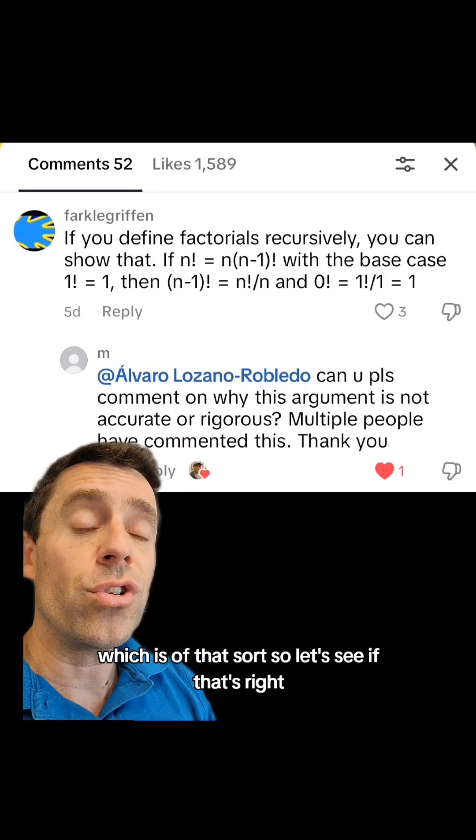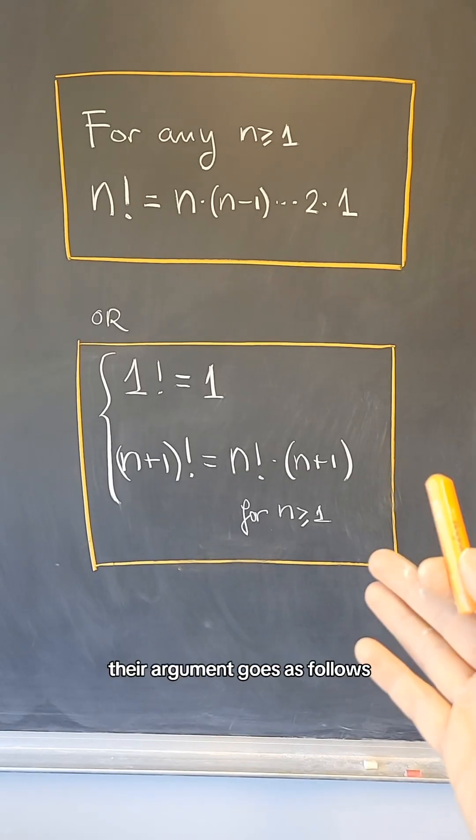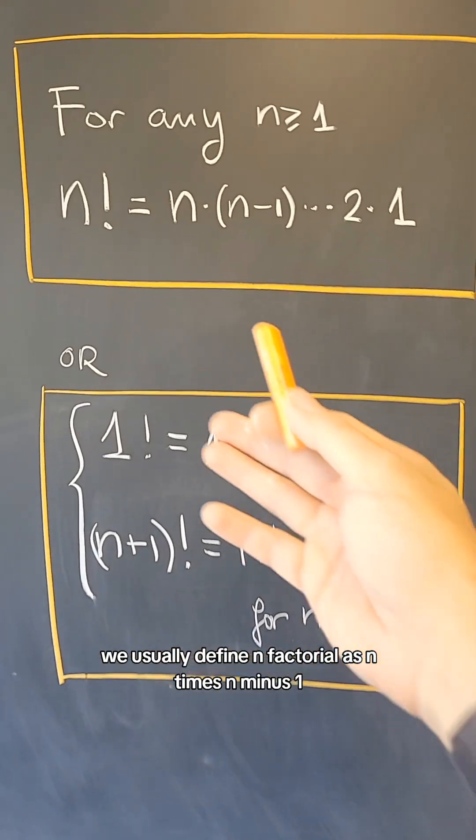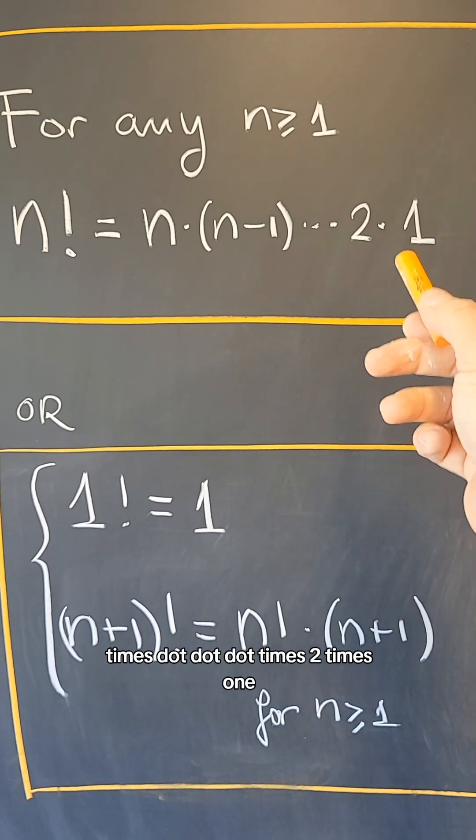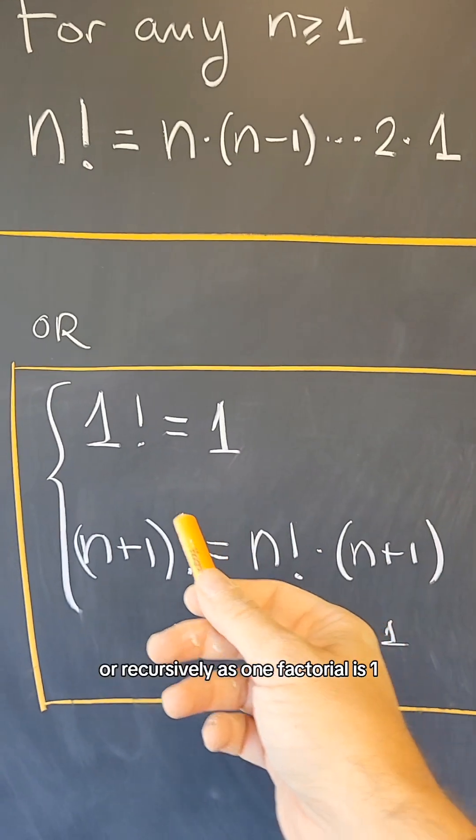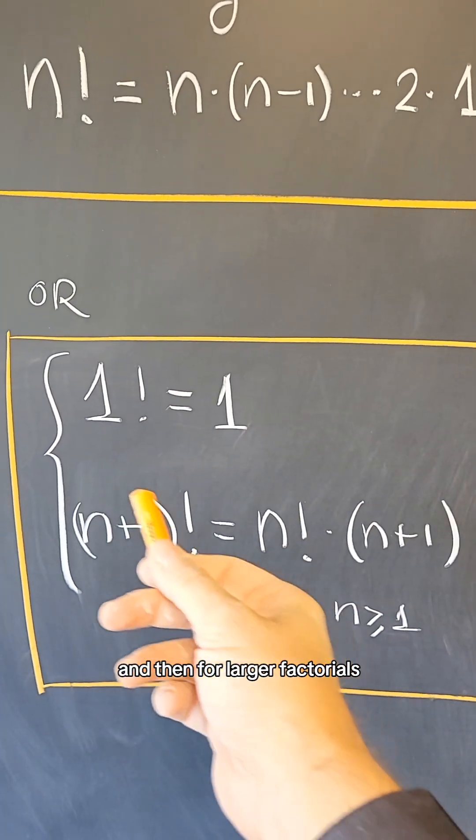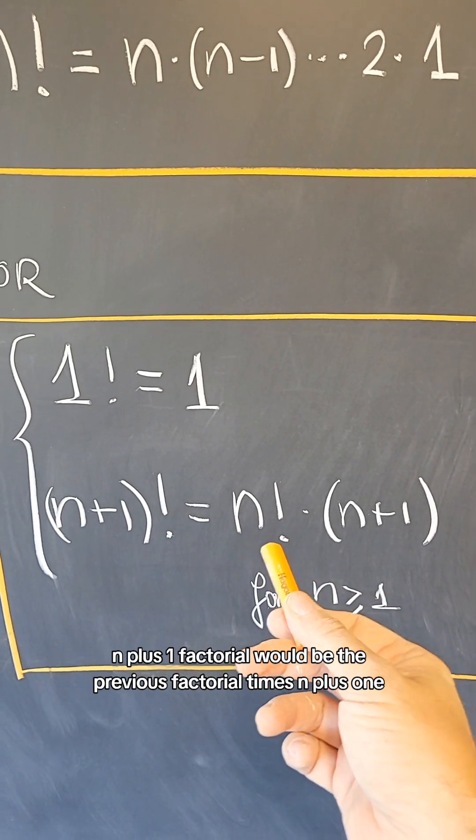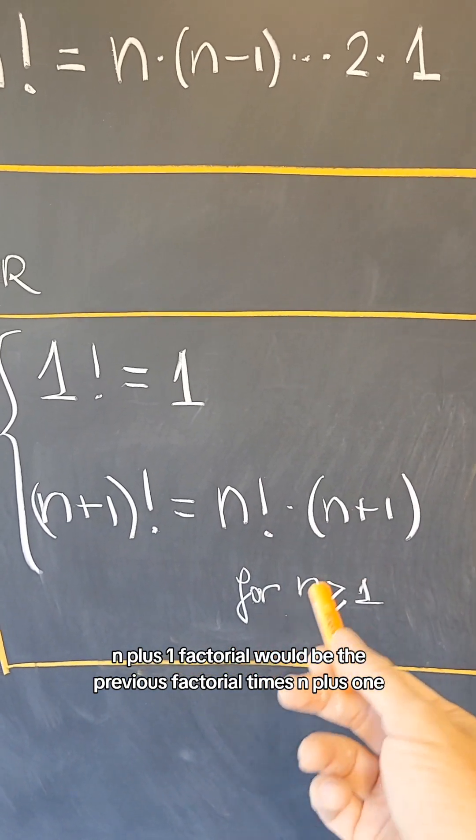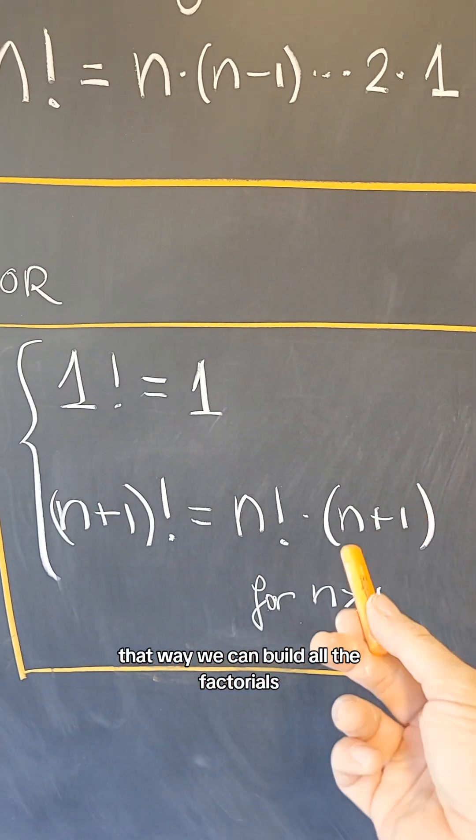Which is of that sort. So let's see if that's right. Their argument goes as follows. We usually define n factorial as n times n minus 1 times dot dot dot times 2 times 1, or recursively as 1 factorial is 1 and then for larger factorials n plus 1 factorial would be the previous factorial times n plus 1, and that way we can build all the factorials.